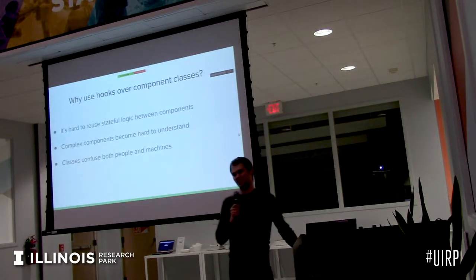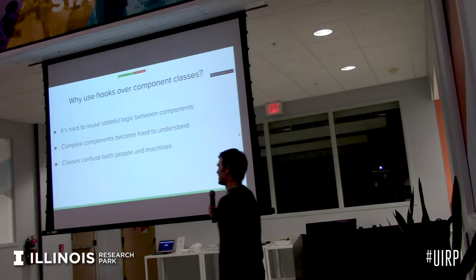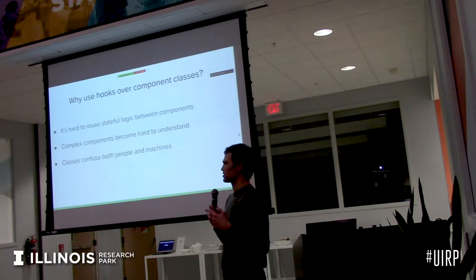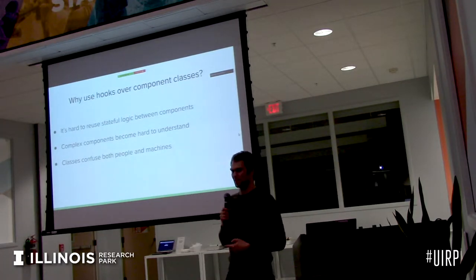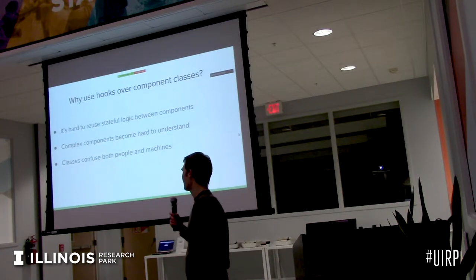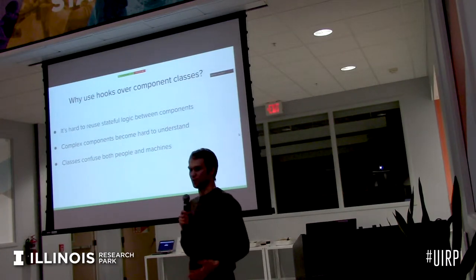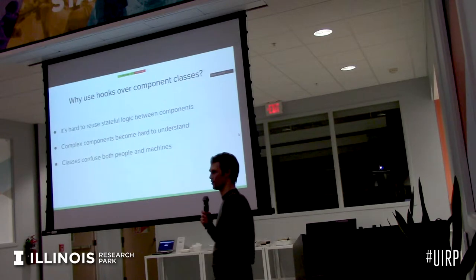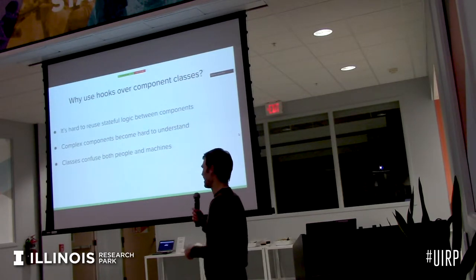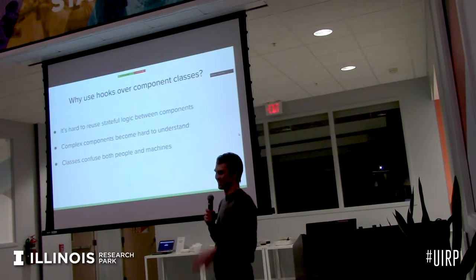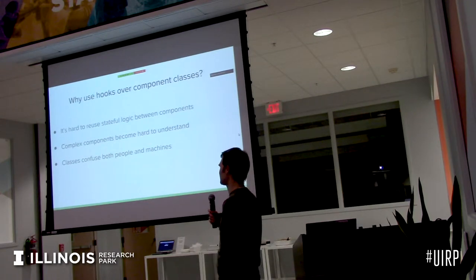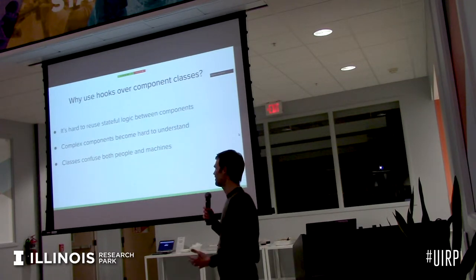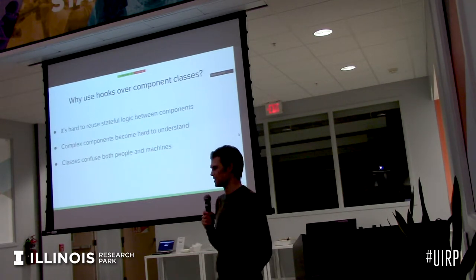So I think it's pretty obvious why hooks. Traditionally in class components, it's hard to reuse stateful logic — you have to think about all the other side effects that may need to be called. Complex components become hard to understand really fast. The difference between a 30-line hooks component and a 60-line class component — it's just a slog to read through and the bigger a component gets, the more difficult it is to understand.